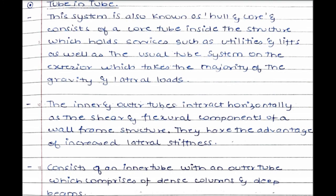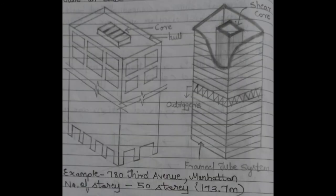Next, the tube-in-tube system, also known as the hull and core system. It consists of a core tube inside the structure which holds all services and utilities such as lifts, staircases, and firefighting systems. The exterior tube system takes care of the majority of gravity and lateral loads. This system can be used for more than 50 to 60 storeys. An example is 780 Third Avenue in Manhattan.